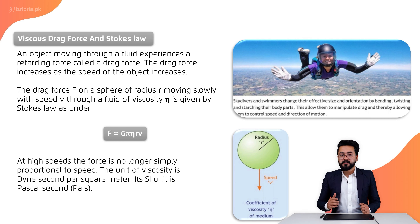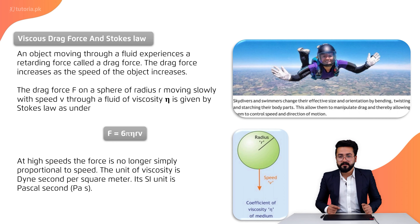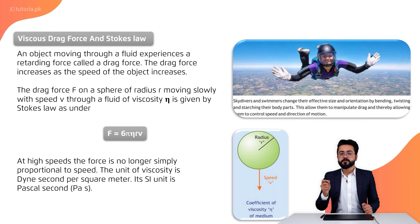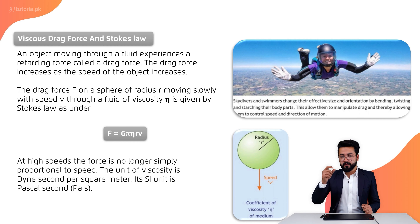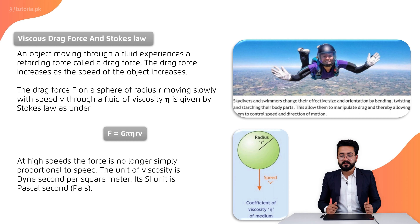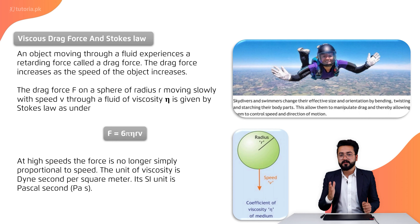Here, 6 and pi are constants. Eta is the viscosity, R is the radius of the sphere, and V is the speed of the object. At high speeds, the drag force is no longer simply proportional to speed.